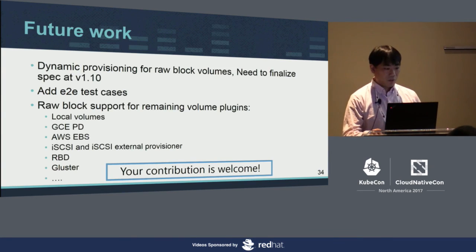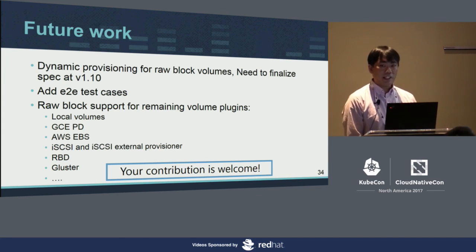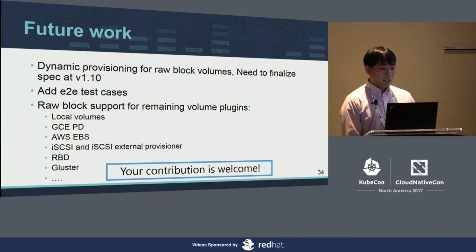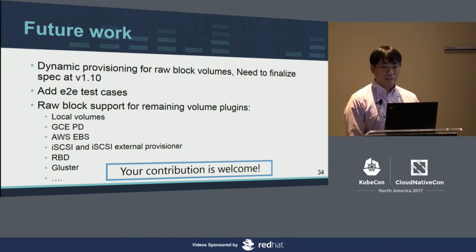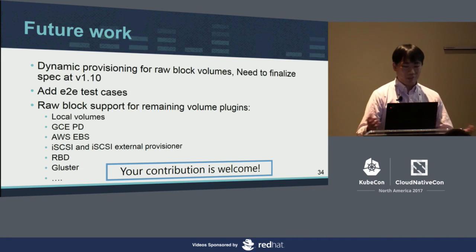For future work: the dynamic provisioning spec is not yet complete. Towards version 1.10, we will discuss and finalize that spec. Also, to move from alpha to beta, we need to add more e2e test cases and unit test cases for raw block volume. Since currently only the Fibre Channel plugin is supported, we need to expand to more volume plugins. We are targeting local volumes, GCE PD, AWS, iSCSI, and RBD for version 1.10. Contributions are welcome.